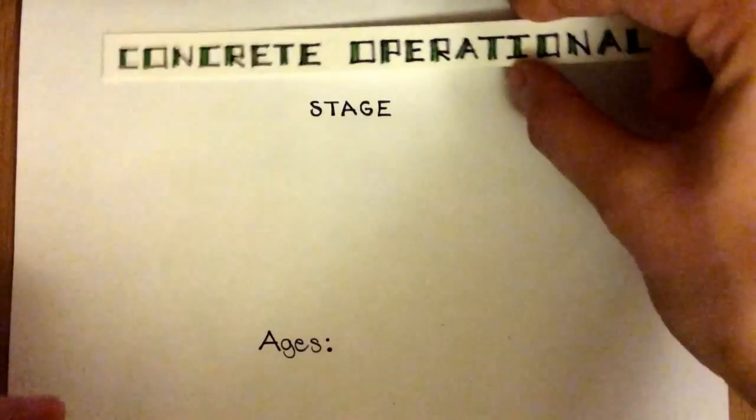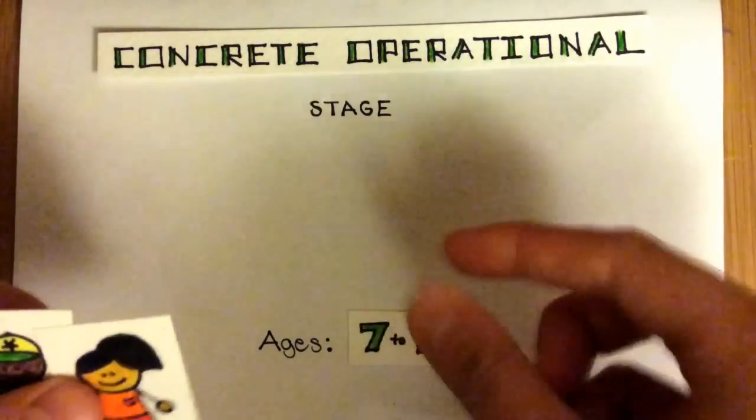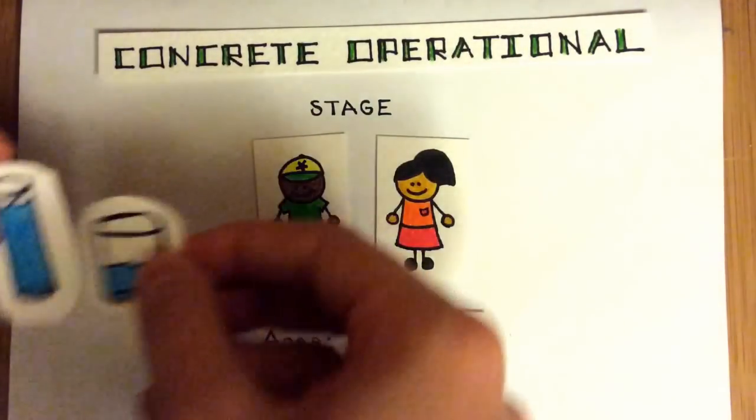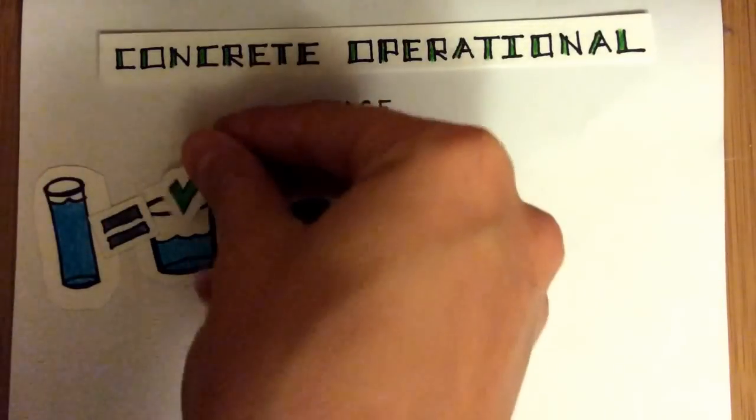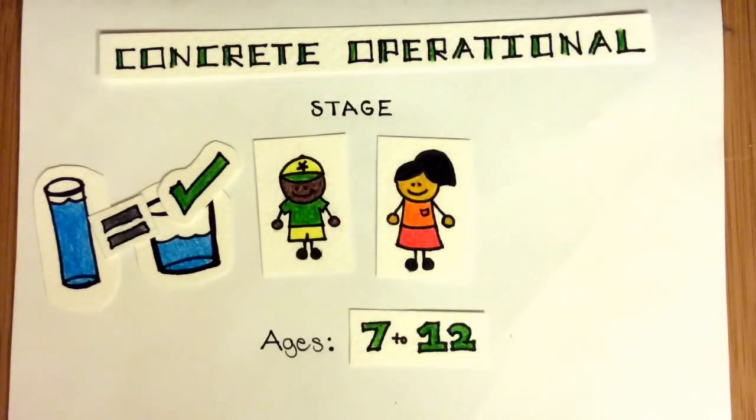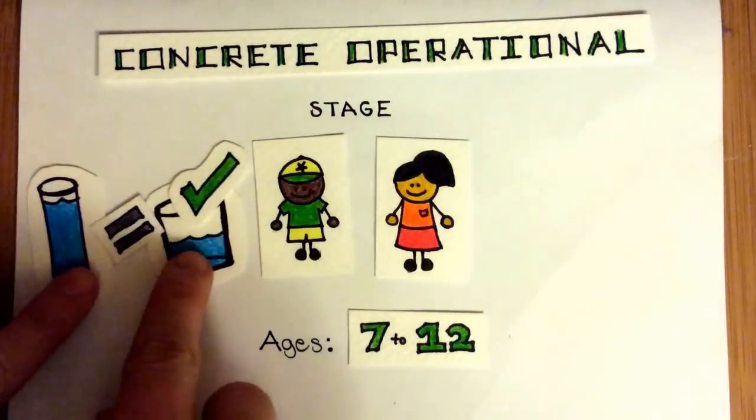The concrete operational stage spans ages 7 to 12. By age 7, children understand the conservation concept and begin to reason logically. However, abstract thinking still remains difficult, and children in this stage often do not perform systematic experiments.